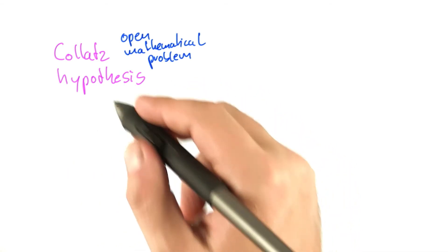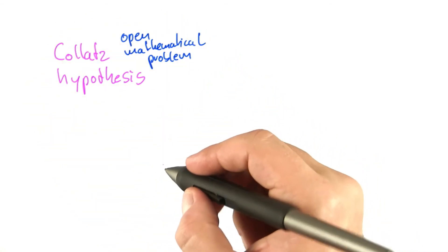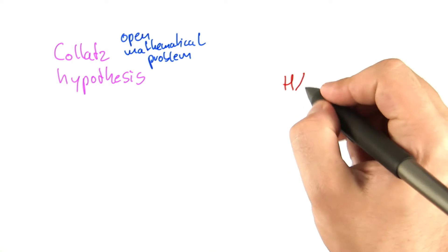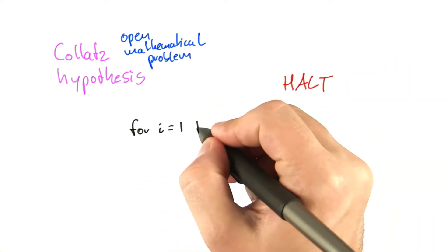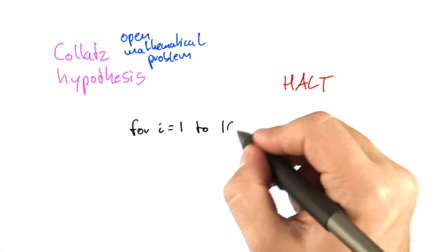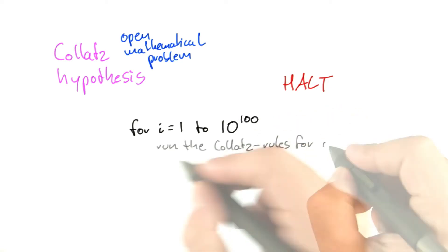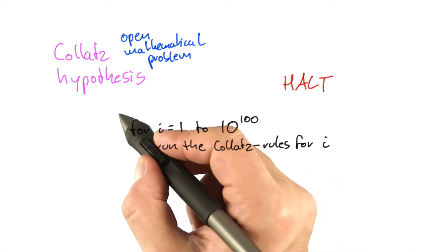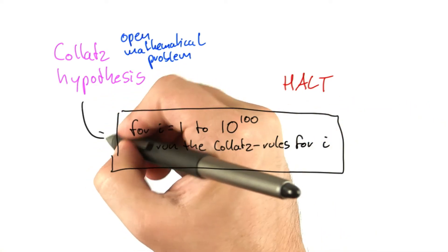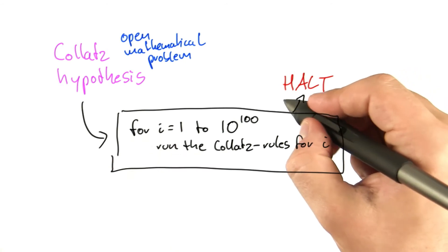But I want to show you something. So if we had an algorithm that solves the halting problem, so if we indeed had this algorithm halt, what we could then do, for example, is write the following program for i equals 1 to, say, 10 to the power of 100, then run the Collatz rules for i. So we start with i equals 1, then we go to i equals 2, and so on. And then we feed this problem into the halting algorithm.